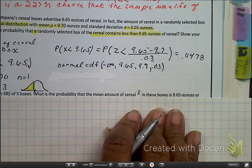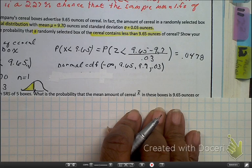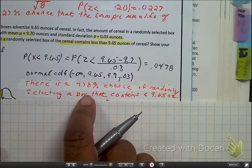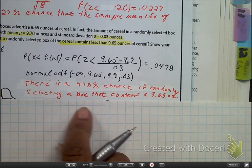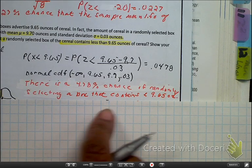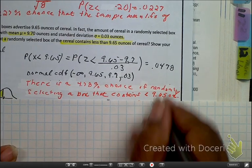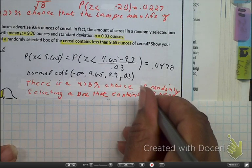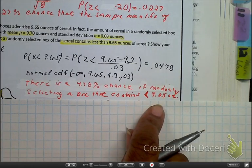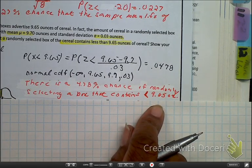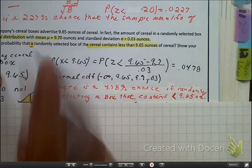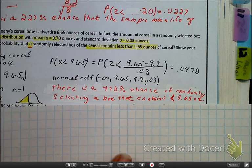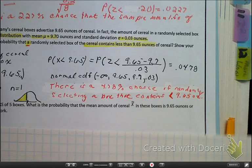So, it's 0.0478. Now, let's do the interpretation. So, there is a 4.78% chance of randomly selecting a box of cereal that contains less than 9.65 ounces. Okay, now that happens because we had a random sample. So, now, go ahead and read the next part and pause.